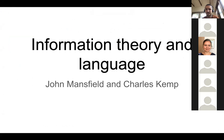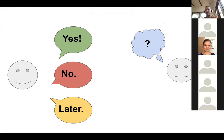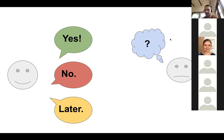Information theory and language. The main core of what we're going to get out of information theory today is consideration of communication and how information is transmitted between a sender and a receiver — a way of looking at that information in terms of a range of possible messages and the uncertainty on the part of the receiver as to what the message is going to be. Out of these core notions, we're going to develop various mathematical formulations, and find many ways in which this seems to be a shaping force in actual human language.